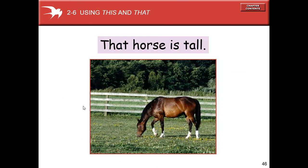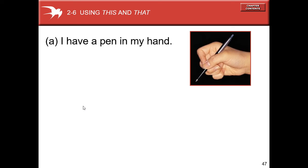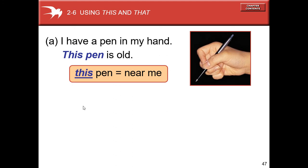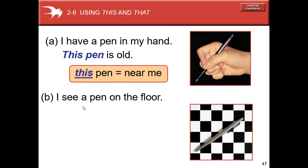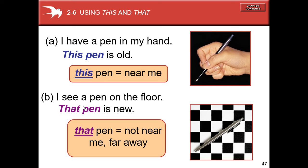Now you see demonstrative pronouns. I have a pen in my hand. This pen is old. This pen is near me. I see a pen on the floor. That pen is new. That pen is not near me, it is far away.